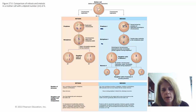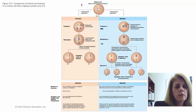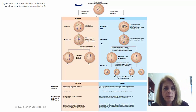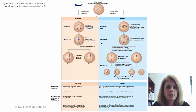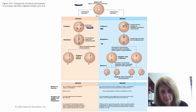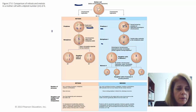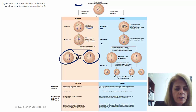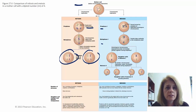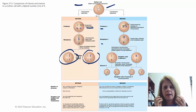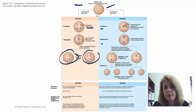In mitosis, you take a cell, double the DNA through DNA replication, make copies of the chromosomes, and then divide everything. You wind up with two daughter cells that are just like the mother cell. The main cell undergoing division is called the mother cell, and the products are called daughter cells.